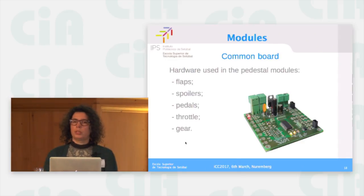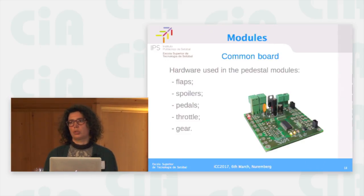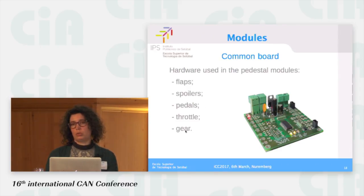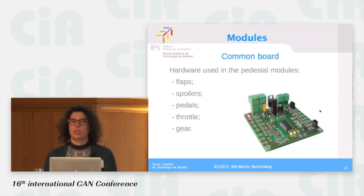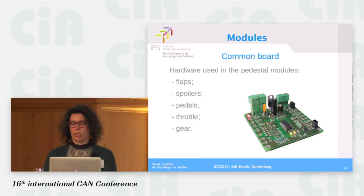Our client asked us to start development with the pedestal area of the cockpit, which is on the right side near the floor. We analyzed the functional requirements for each module and found many functionalities were the same with tailored details for each. So we developed a common board that can implement the flaps module, spoiler module, pedals, throttle, and gear module — the gear module belongs to the front side but uses the same board. This module is configured at manufacturing time, where the manufacturer selects which function will be implemented using the module configuration service through the CAN Aerospace interface.